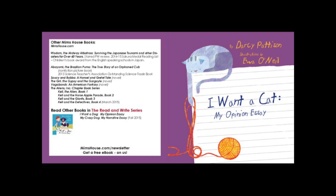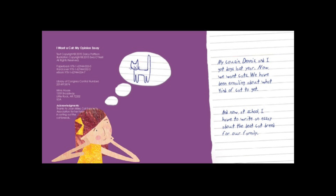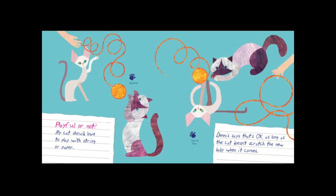This is I Want a Cat, My Opinion Essay by Darcy Pattison, illustrated by Eva O'Neill. My cousin Dennis and I got dogs last year. Now we want cats. We have been emailing about what kind of cat to get, and now at school I have to write an essay about the best cat breed for our family. My teacher Mr. Eagle says, 'Mellie, you have to have criteria.' My criteria: active or lazy — I want a cat that pounces. Dennis wants a lazy cat like his lazy dog Clark Kent. Playful or not — my cat should love to play with string or paper, as long as it doesn't scratch the new baby when it comes.